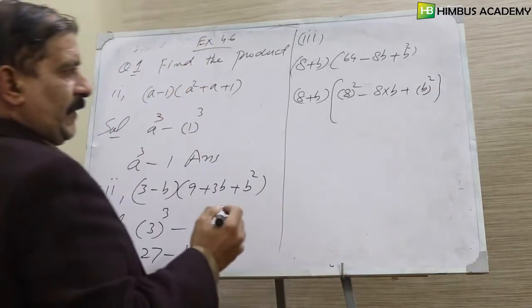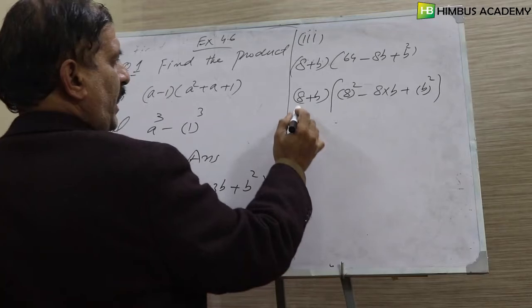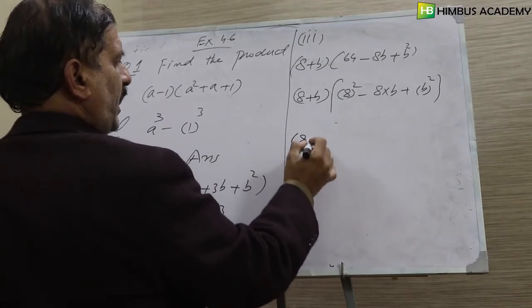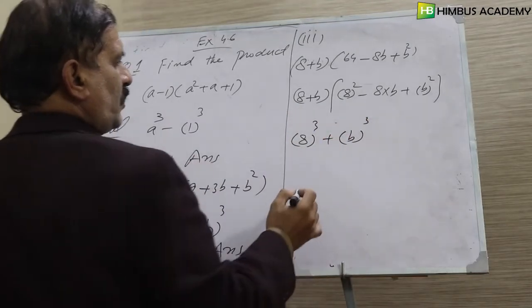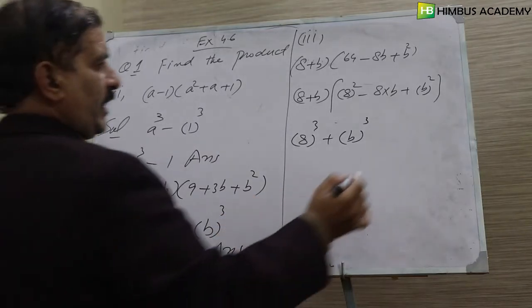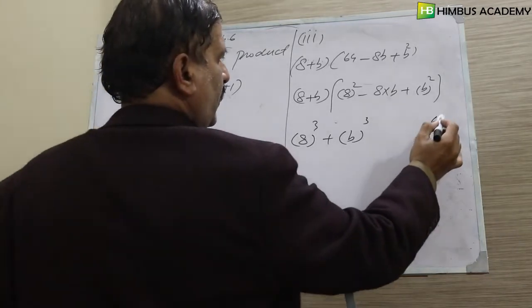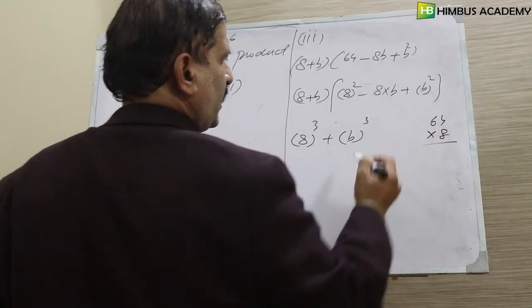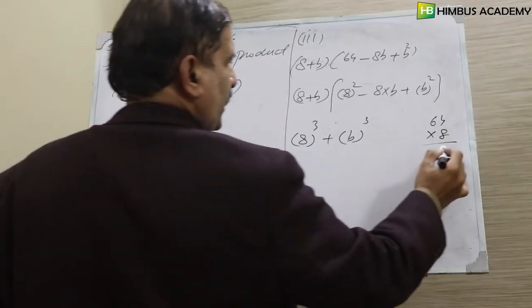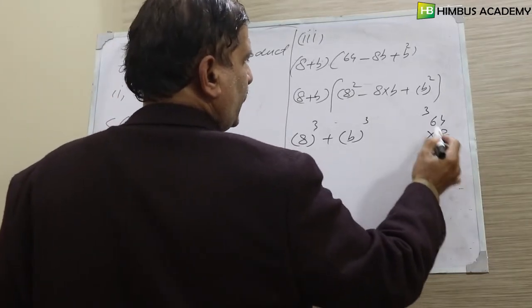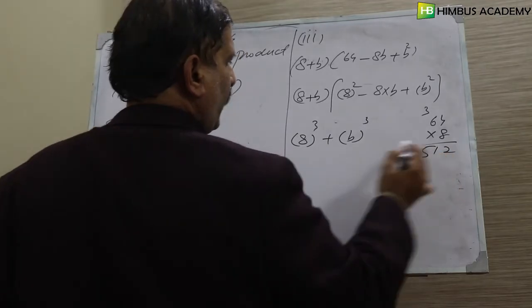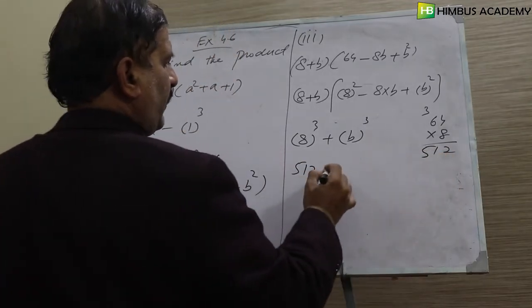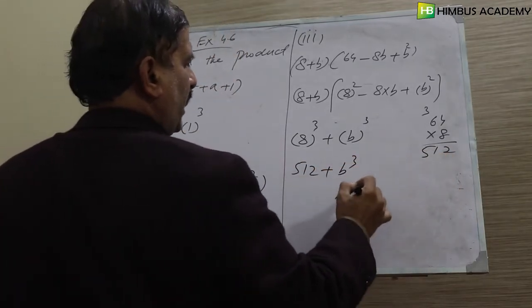Now A plus B becomes 8 cube plus B cube. What is 8 cube? 8 times 64 multiply 8: 8 times 4 is 32, 8 times 6 is 48, 48 plus 3 is 51, equals 512. So 512 plus B cube is our answer.